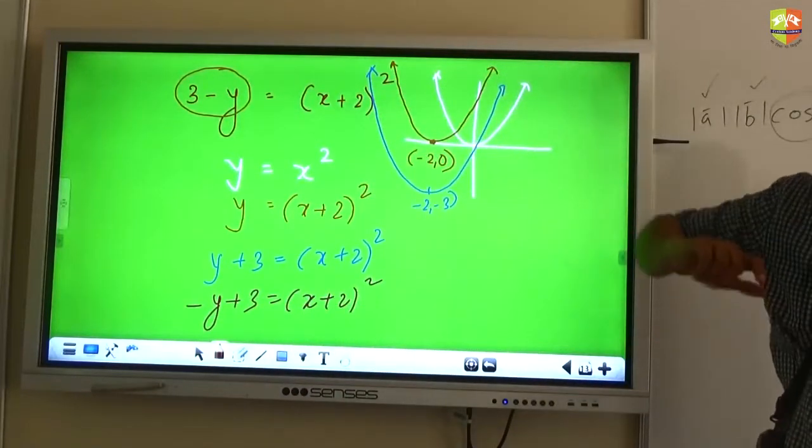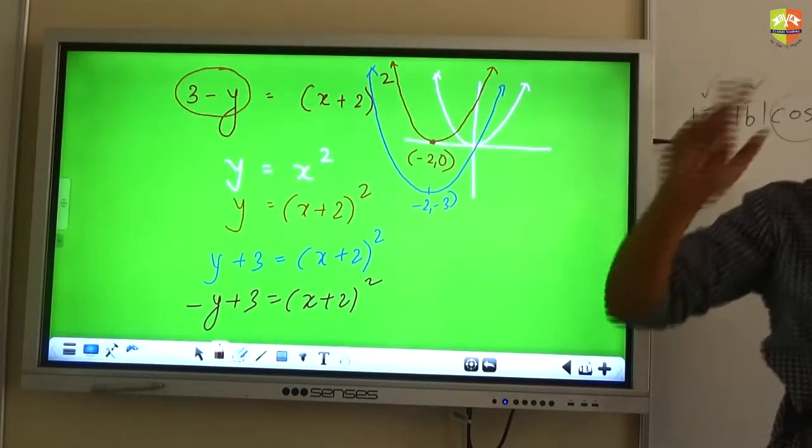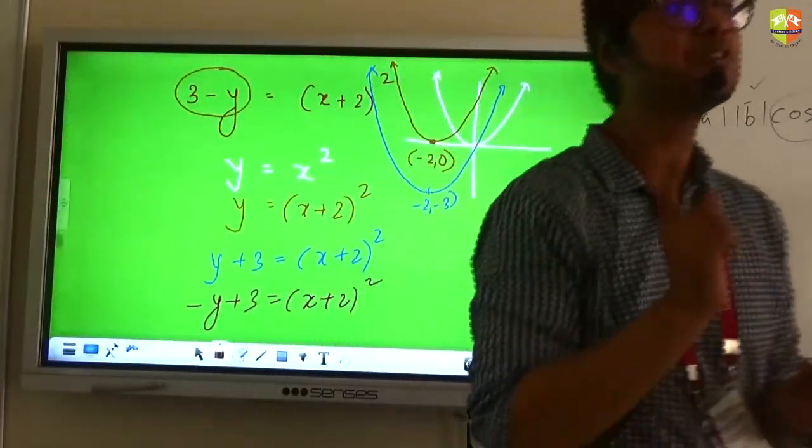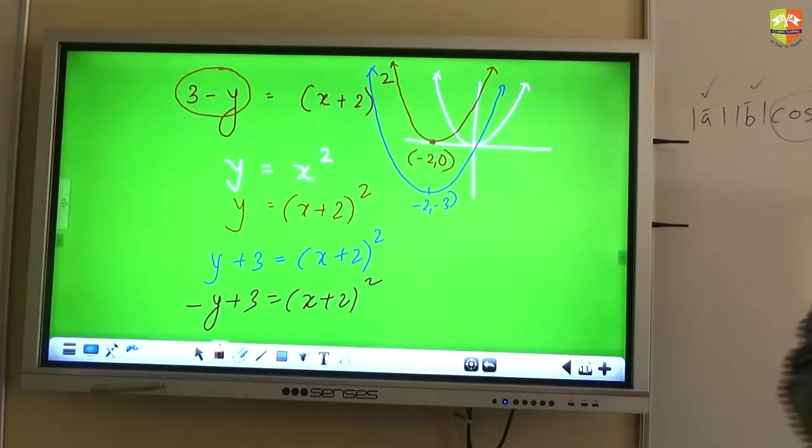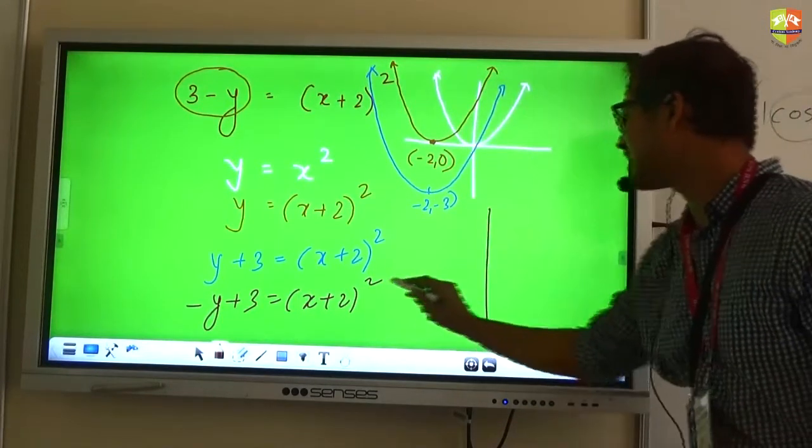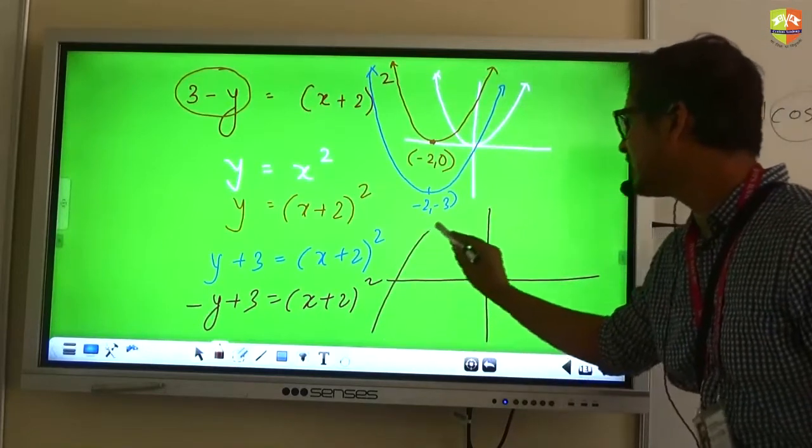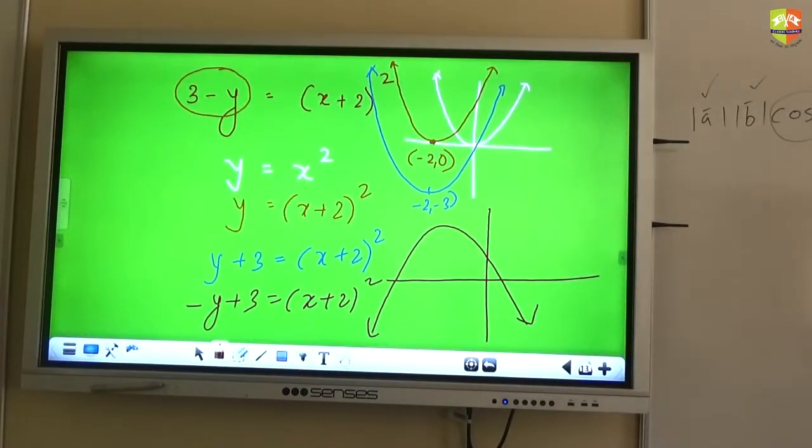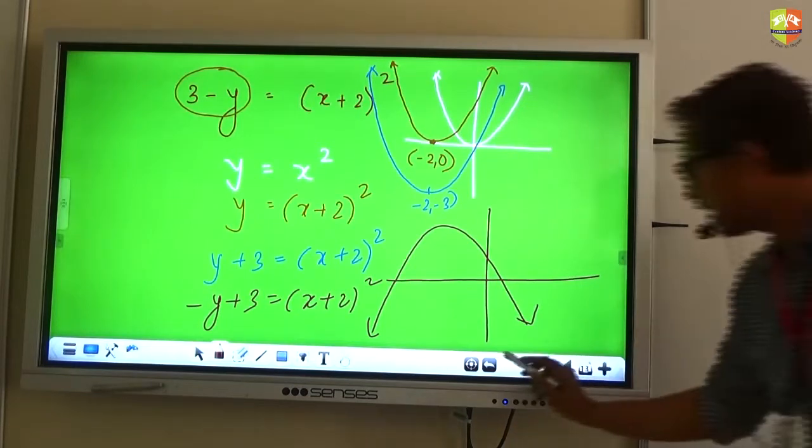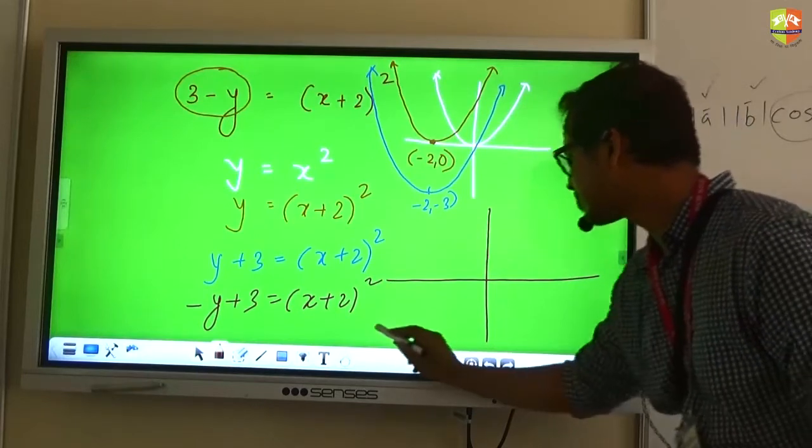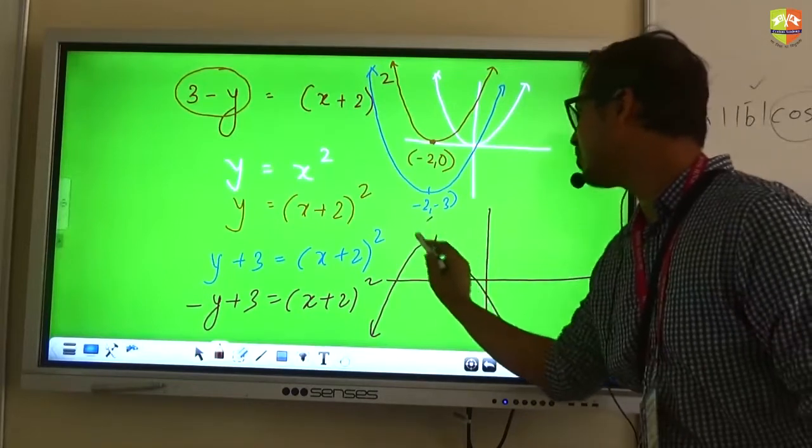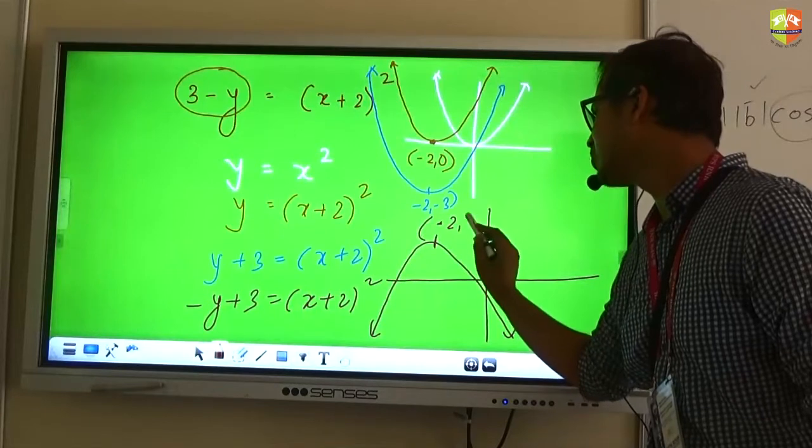It will become minus y plus 3 is equal to x plus 2 square. Minus y means what? Reflecting the graph about x axis. Changing the sign of x reflecting the graph about y axis, changing the sign of y reflecting the graph about x axis. So if I reflect this graph about the x axis, this is what you see.